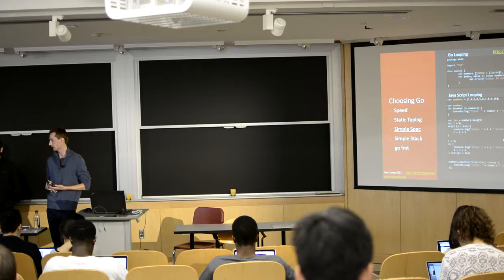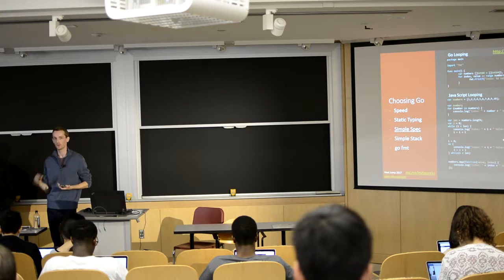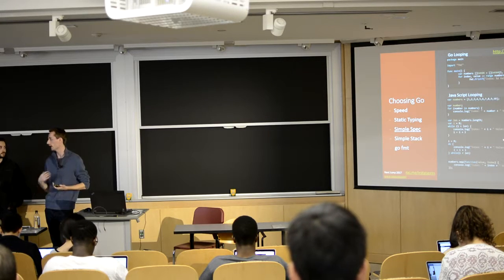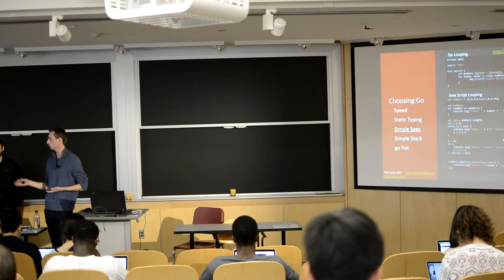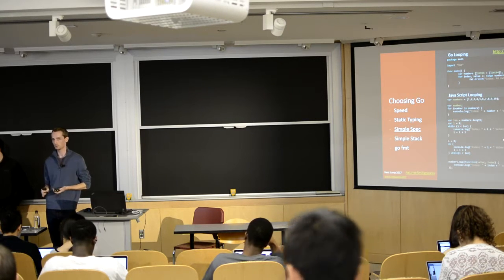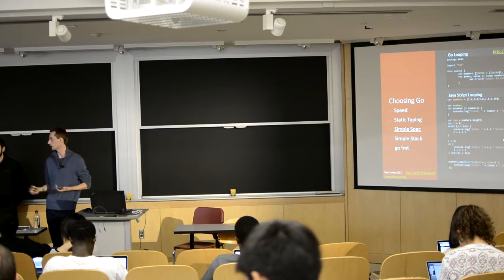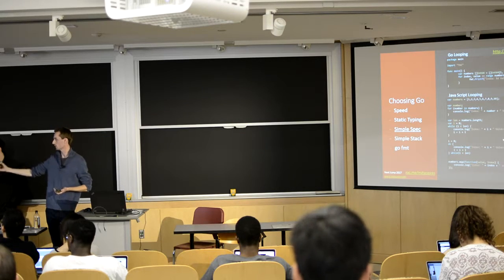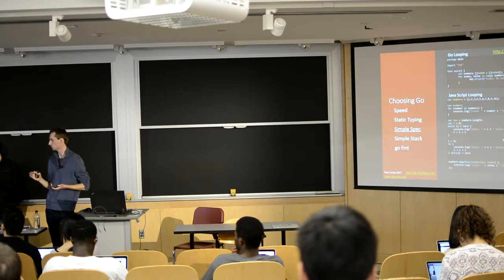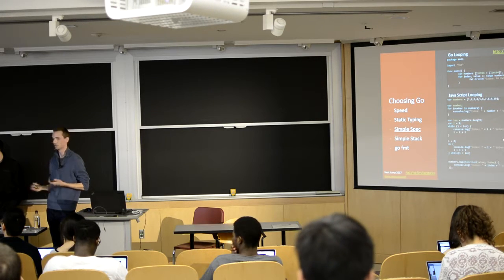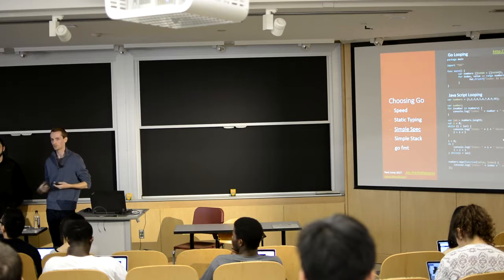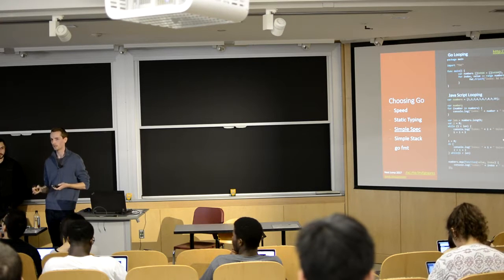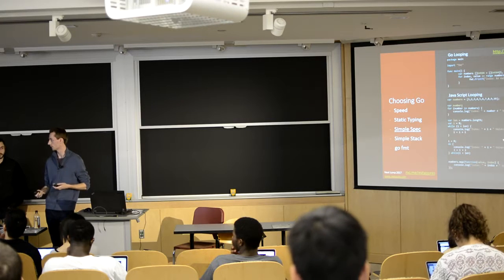Another advantage of Go is that there are not a lot of ways to do one thing. If you want to do something, there is essentially one way to do it. For example, looping in Go: there is one type of loop — a for loop — which acts more like a for-each loop. There is no while loop, there's no do loop. In JavaScript, for instance, you could write four different loops that all do the same thing, but when you're working with a team it's nice to know that if there's a loop, it's going to look like the loop you're familiar with.